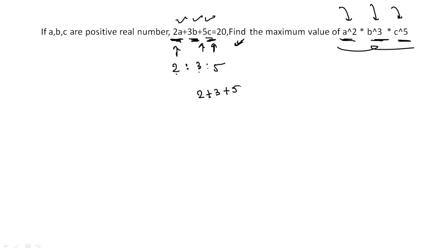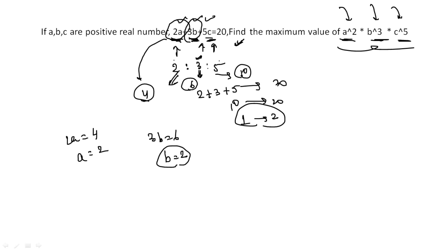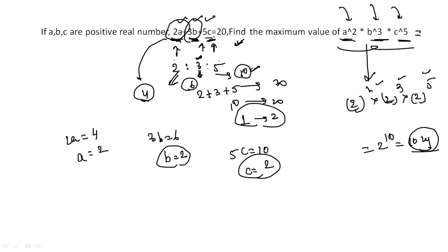Since 2 + 3 + 5 = 10 and the total is 20, one part equals 2. So: 2a = 4 → a = 2; 3b = 6 → b = 2; 5c = 10 → c = 2. Now substitute into the expression: a² × b³ × c⁵ = 2² × 2³ × 2⁵ = 2^(2+3+5) = 2¹⁰ = 1024. This matches the result from Method 1.